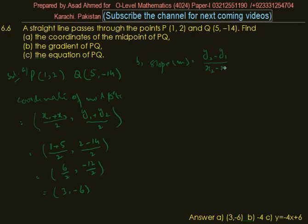The gradient M becomes y₂ is -14 minus y₁ which is 2, divided by x₂ is 5 minus x₁ is 1. So it is -16 divided by 4, and when we simplify it becomes -4. The slope is -4.